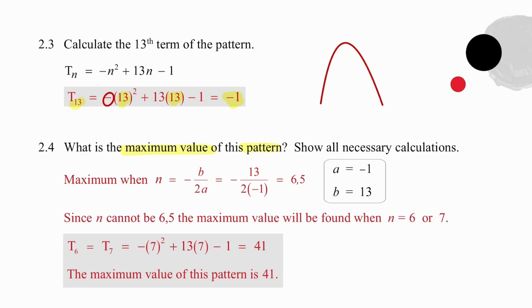To answer this question, we simply need to find the value of a, which is minus 1, and the value of b, which is 13, taken from the formula coefficients of n squared and n. We substitute those values into the formula for the axis of symmetry, given by n equals minus b over 2a. Careful substitution produces the result of 6.5.